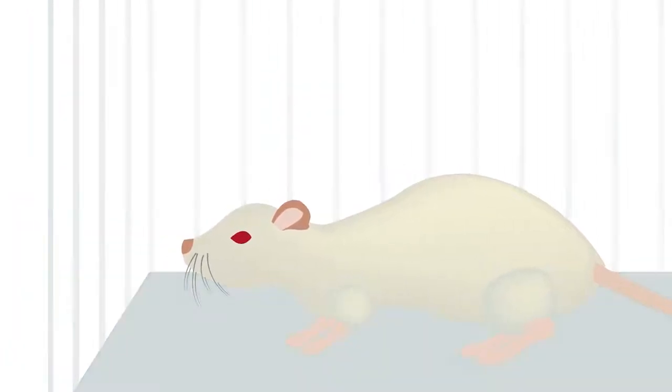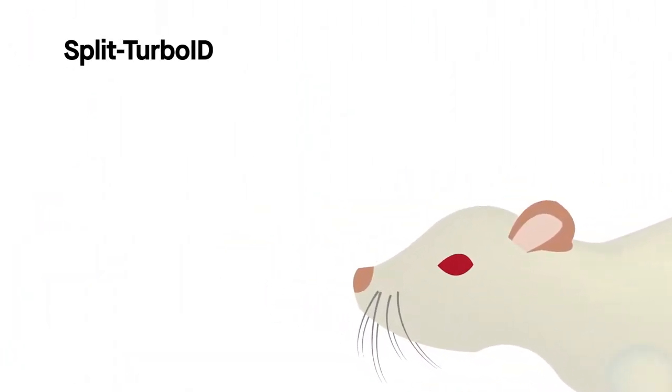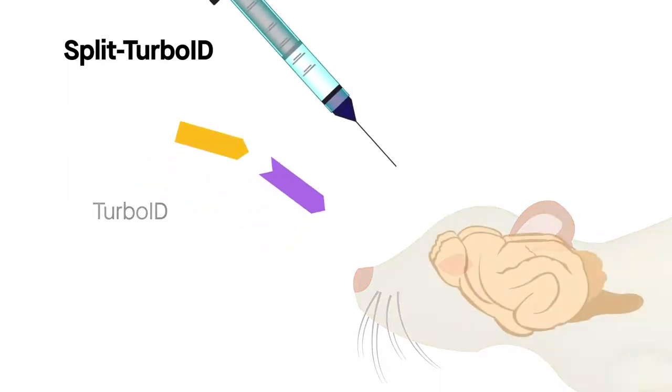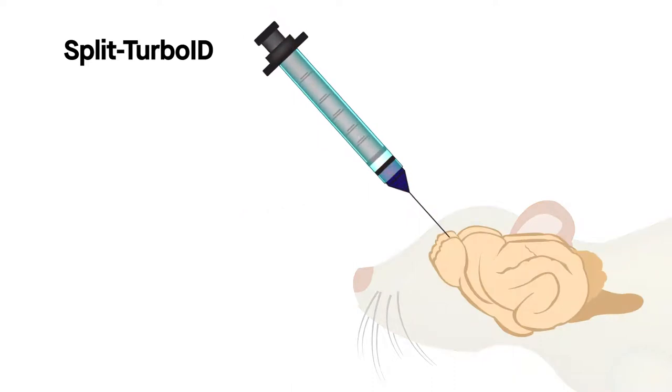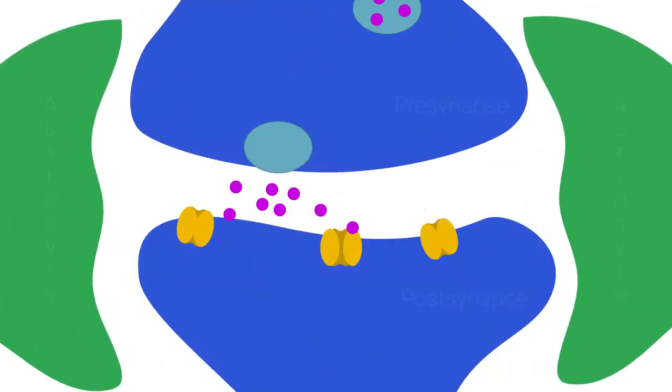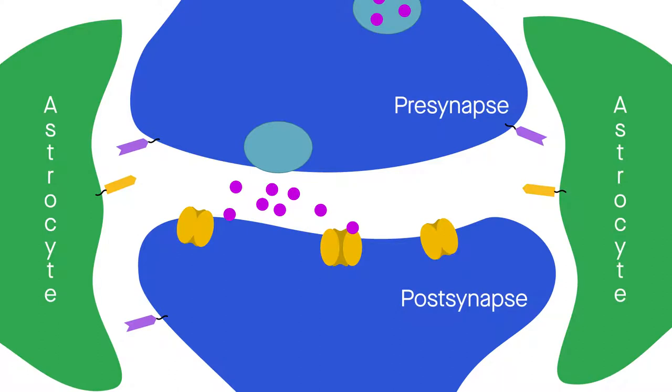The approach is called split-turbo-ID. As the name suggests, the enzyme turbo-ID is split into two inactive fragments and injected into the cortex of mice. The complementary fragments attach independently to the surface of neurons and astrocytes. The areas between synapses where these fragments reunite ignite with enzymatic activity. These are the regions where astrocytes interact most closely with synapses.